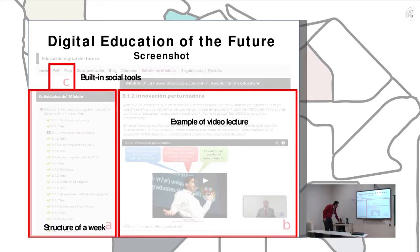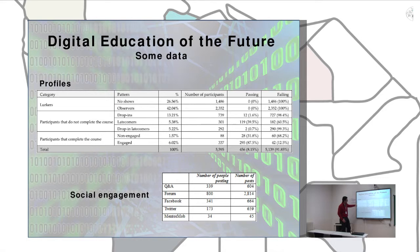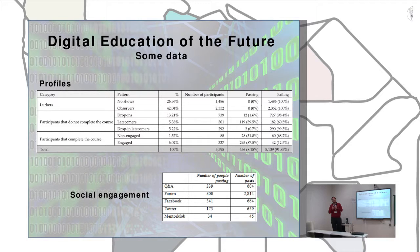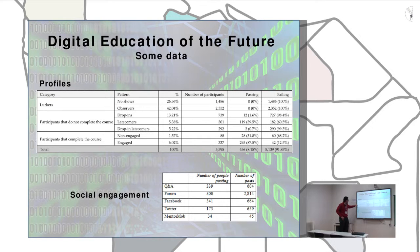Some data about the profile of the students: we had around 5,500–5,600 students, with a passing rate of 8.15%, which is the average for MOOCs. In Mediatrics, there are three different big groups of people: Lurkers, which include no-shows — those who register but never show up; Viewers, those who watch some videos but never complete any assessment activities; and Drop-ins, those who start the course but leave at some point. And then Late-comers, those who enroll after the course starts but still finish it.